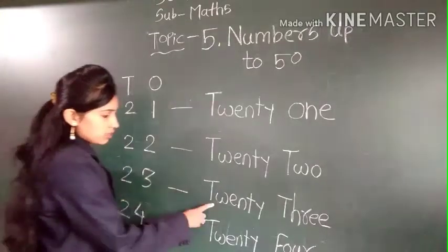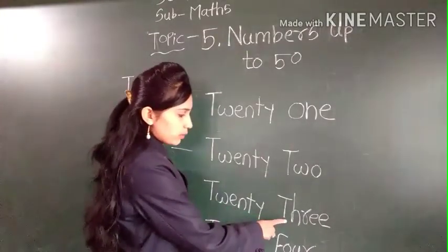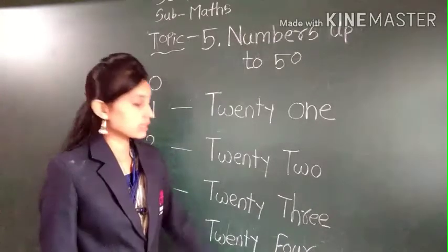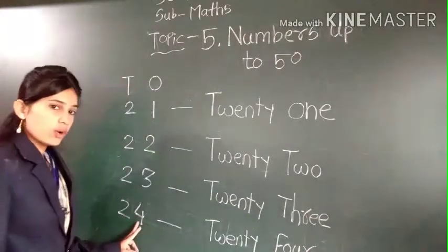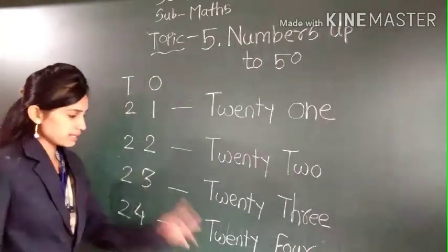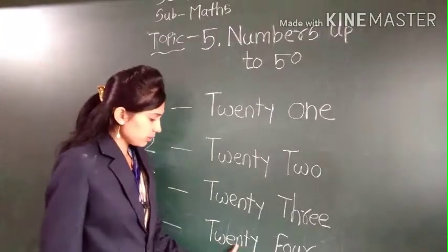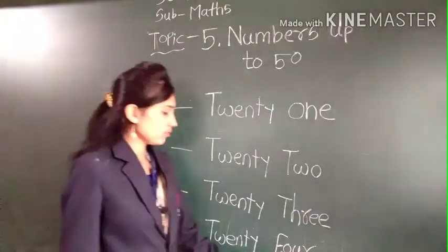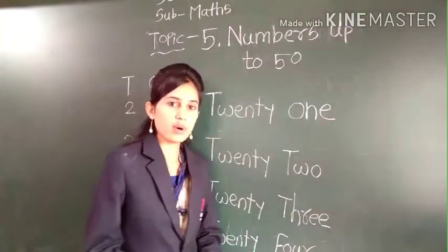23. T-W-E-N-T-Y, 23, T-H-R-E-E, 3. 24. Four ones and 2 tens. 24. T-W-E-N-T-Y, 24, F-O-U-R, 4.